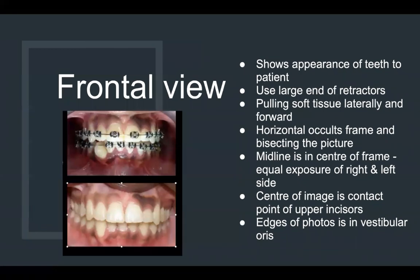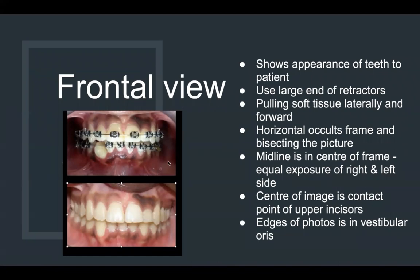For the frontal picture — comparing a poor and good example — the problem in a bad picture is that the right side is more visible than the left side. In a good picture, right and left are equally exposed, and top and bottom should be equally exposed. If not, do the cropping yourself, but make sure right and left are equally exposed. The frontal view shows the appearance of the teeth to the patient. Use the large end of the retractors, pulling soft tissue laterally and forward, so you can see the whole dentition to the end.